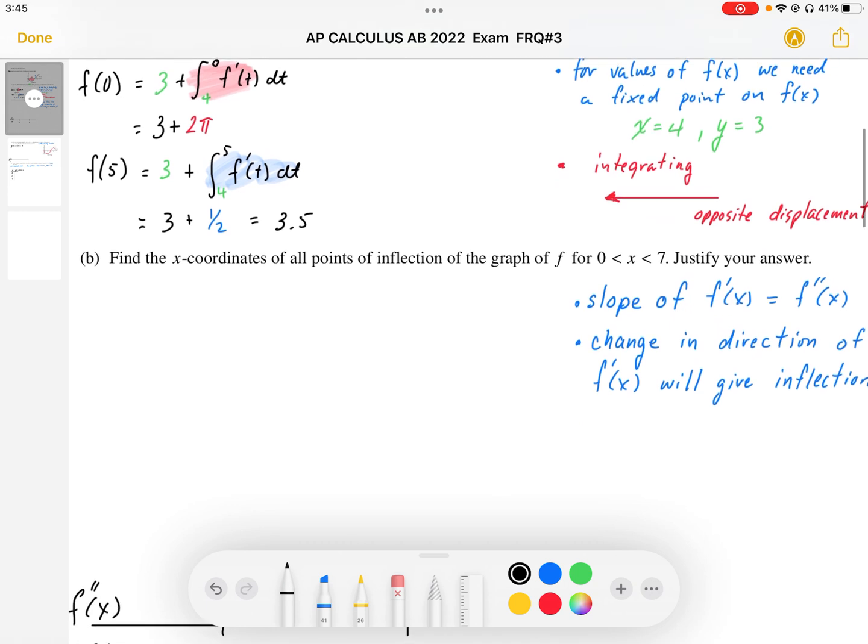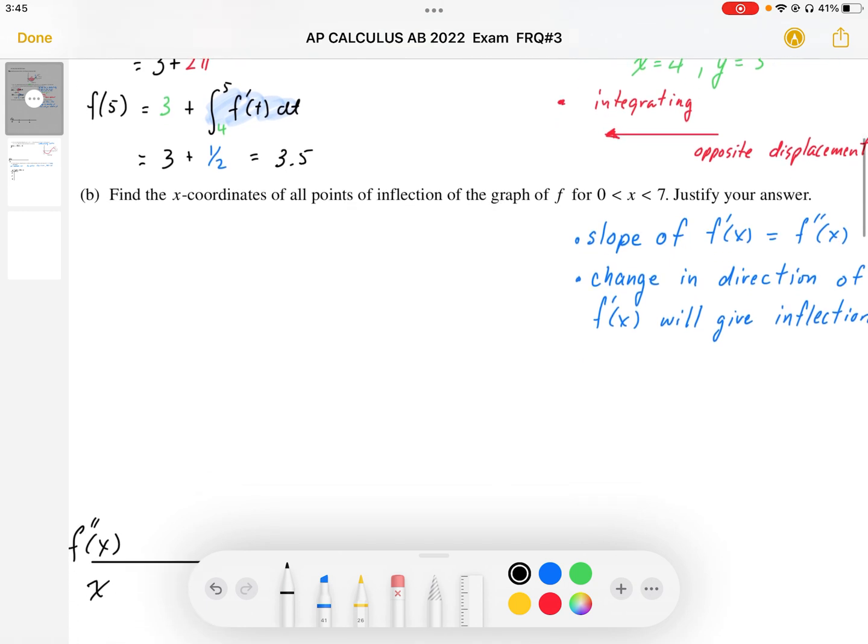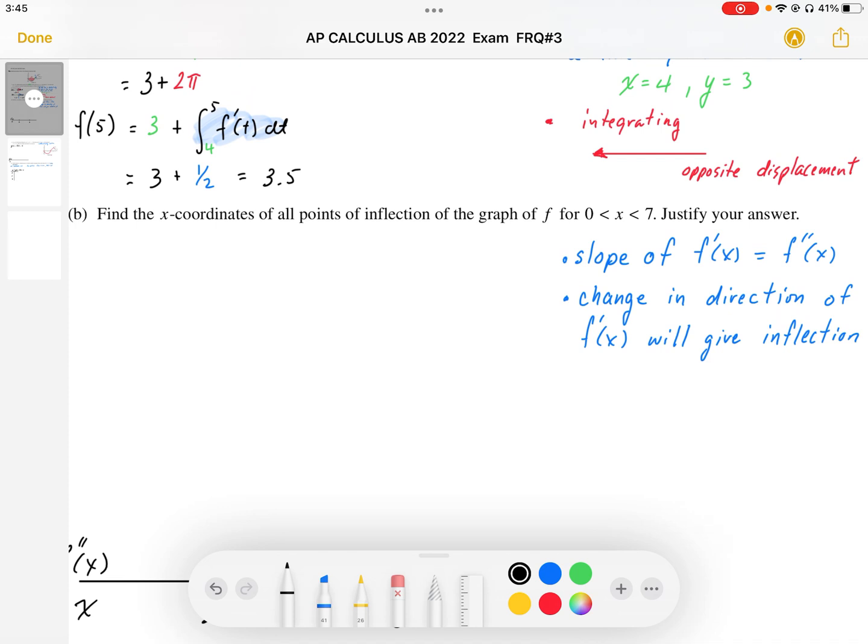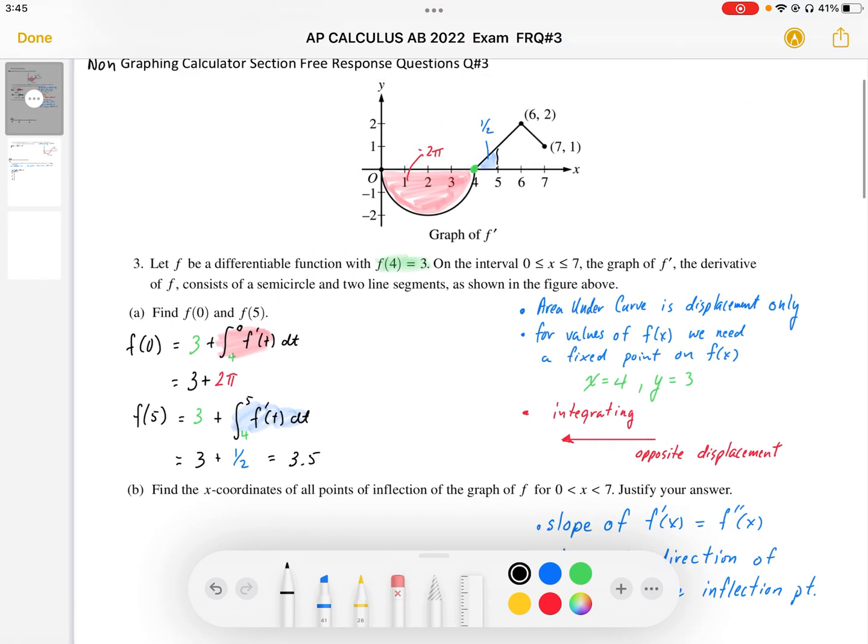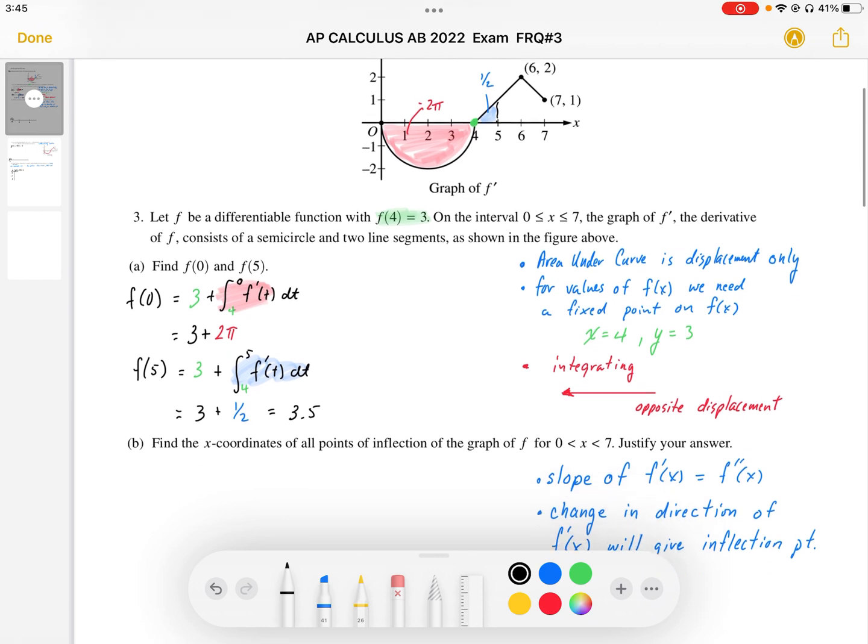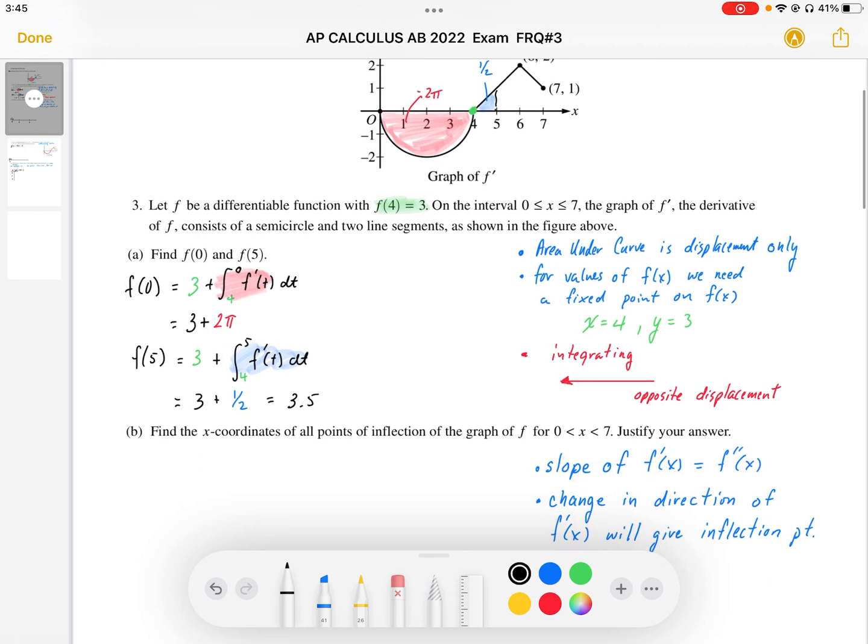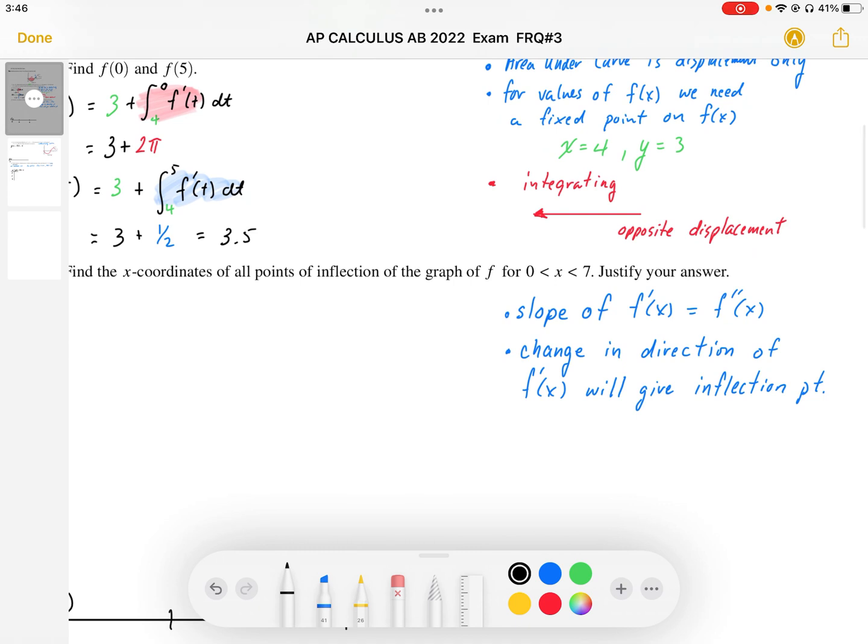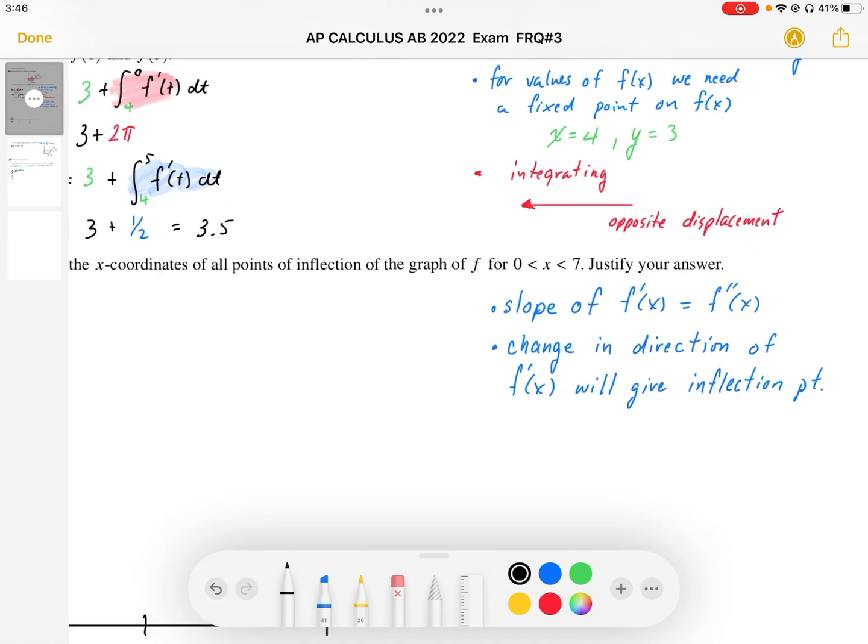Part B says, find the x-coordinates for all points of inflection on the graph of f for 0 to 7. One of the key ideas is that the slope of f prime is going to be the second derivative or f double prime. So we have the f prime graph, and if we look at the slope of the f prime graph, we're looking at f double prime, and that will tell us something about concavity.